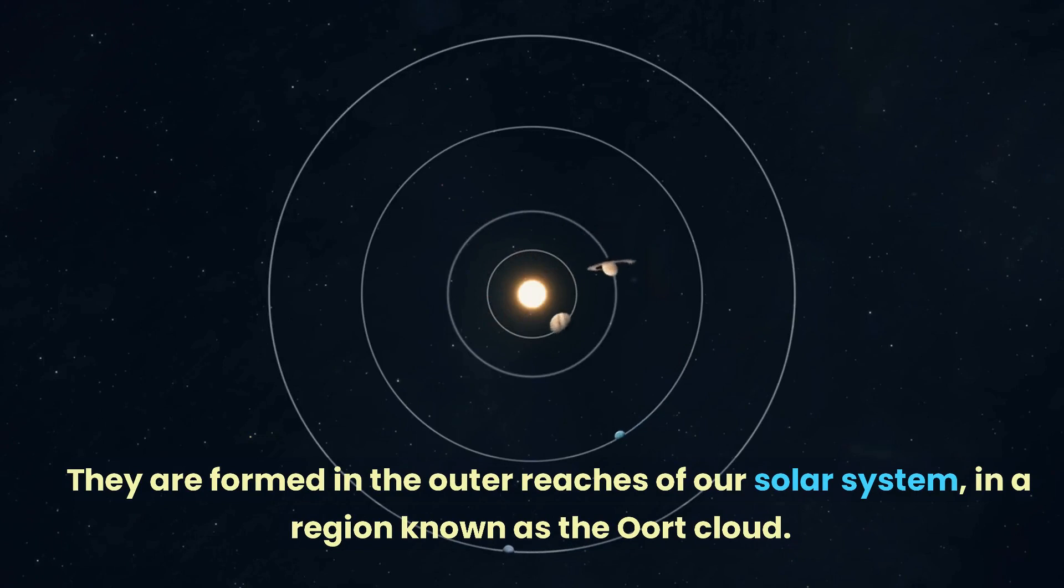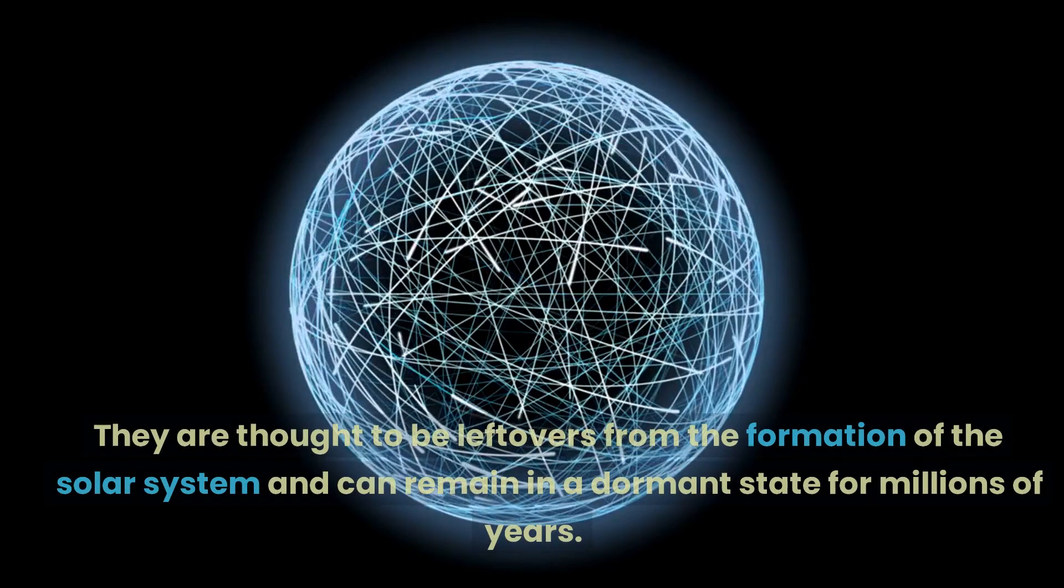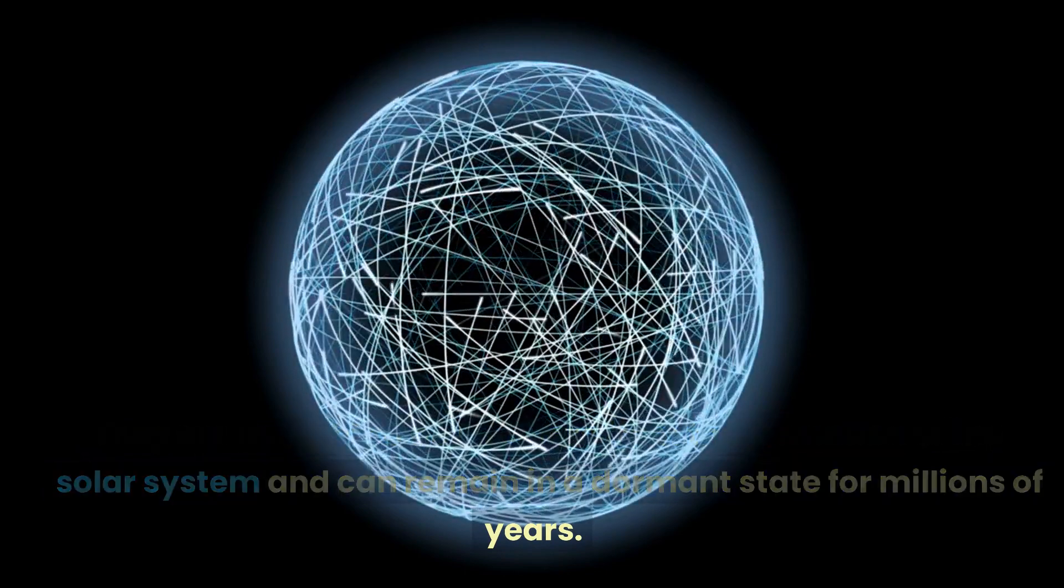They are formed in the outer reaches of our solar system, in a region known as the Oort Cloud. They are thought to be leftovers from the formation of the solar system and can remain in a dormant state for millions of years.